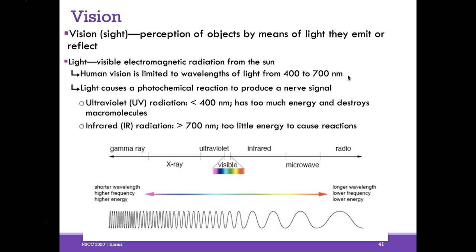UV light has way too much energy — it destroys macromolecules like DNA by breaking the double helix because it has too high a frequency. Infrared, on the other hand, has too little energy to cause a photochemical reaction to produce a nerve signal. So we have this very narrow range of visible light from the sun — the spectrum we know as red, orange, yellow, green, blue, indigo, violet: the colors of the rainbow.